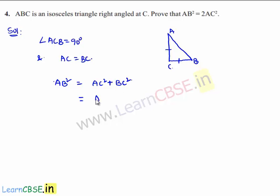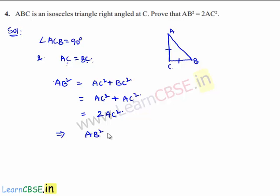AC square remains as it is, and now BC can be replaced by AC since AC is equal to BC. So this will be AC square. Now AC square plus AC square is nothing but 2AC square. So finally we get that AB square is equal to 2 times AC square. This is the required proof.